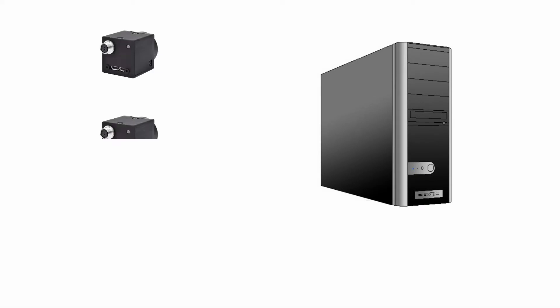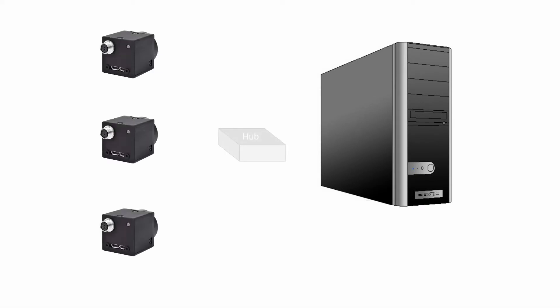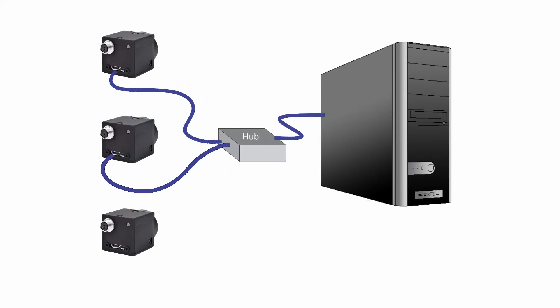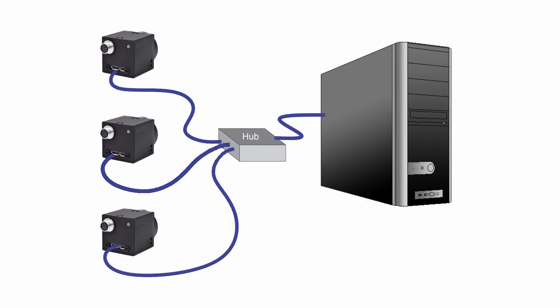Since USB 3.0 is a network connection, hubs facilitate connection of many cameras to one computer. However, using a hub and connecting multiple cameras to one USB 3.0 port, or connecting a camera together with other peripherals to the same port, lowers the available data rate for a camera and increases the latency in transferring image data.